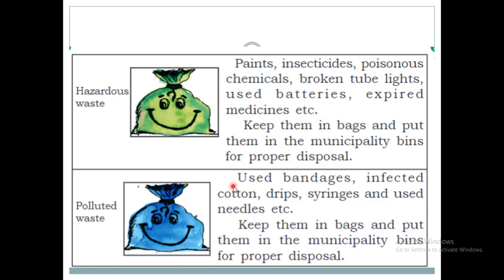Next is polluted waste, which is hospital waste — infected cotton, strips, syringes, used needles, used bandages, etc. This waste also has to be kept in bags and put in the municipality bins for proper disposal. So these are the four types of waste: dry waste, wet waste, hazardous waste, and polluted waste.